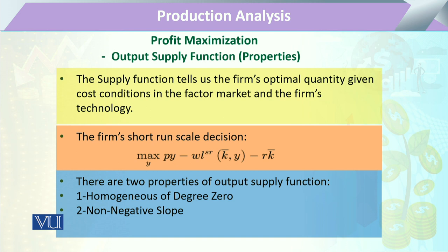When we check a firm's optimal quantity, we can see that the firm is going to produce that amount of output that sufficiently equates with its budget. Here, RK shows the amount of capital utilized in the form of fixed capital, or we can say it is the sunk cost that has already been utilized for the installation of a plant, purchase of land, or machinery.